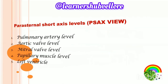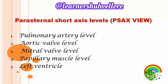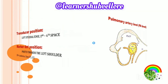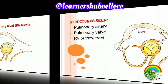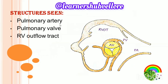By bread loafing, we get all five views: the pulmonary artery level, aortic valve level, mitral valve level, papillary muscle level, and left ventricle level. At the pulmonary artery level, the structures seen are the right ventricular outflow tract, aortic valves with three cusps — non-coronary, left coronary, and right coronary — pulmonary valve, and pulmonary artery.